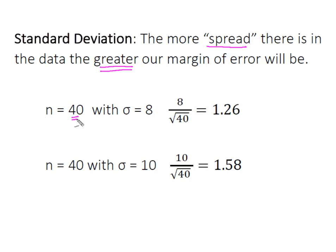So I have a sample size of 40, population standard deviation of 8 gives me a standard error of the mean of 1.26. But what if in my same sample size of 40 I had a standard deviation of 10?